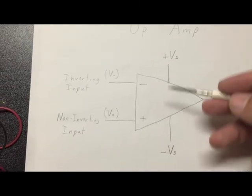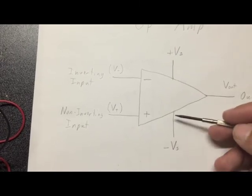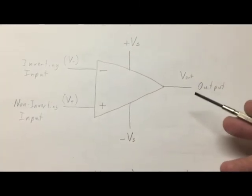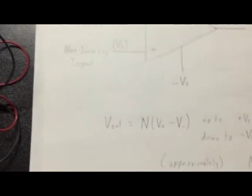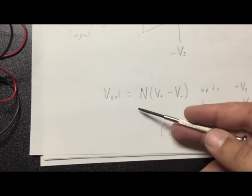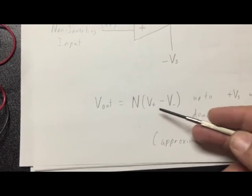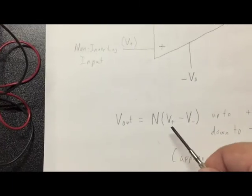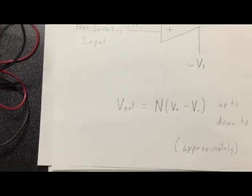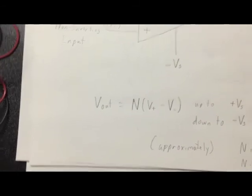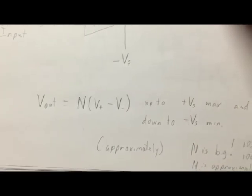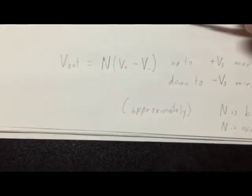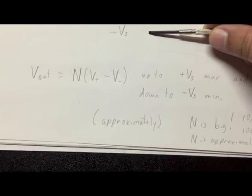In addition to that, you have some power supply. You've got a positive supply and a negative supply, and it's going to need this to produce power on the output. And then you've got an output. So what comes out of the output? It turns out what comes out of the output is some number times the difference between the positive and negative, or the non-inverting and inverting voltage inputs. So it's always the non-inverting minus the inverting. And it's limited though. The most positive it can be is up to positive Vs, actually usually a little bit below the source voltage. And it can go down to negative Vs, or maybe a little bit above that. So it's bounded.